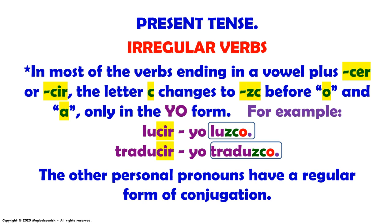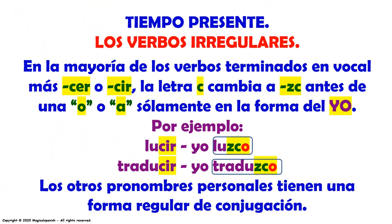The other personal pronouns have a regular form of conjugation. Tiempo presente, los verbos irregulares. En la mayoría de los verbos terminados en vocal más CIR o CIR, la letra C cambia a ZC antes de una O o A, solamente en la forma del yo. Por ejemplo: lucir — yo luzco; traducir — yo traduzco. Los otros pronombres personales tienen una forma regular de conjugación.